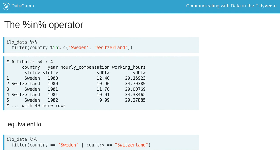While the equality operator in the previous example can filter for only one value at a time, the in operator can look up multiple values, like in this example — here we filter for countries in the vector on the right-hand side of the in operator, which is actually equivalent to using the or operator with multiple equality operators. So in the following exercise, you are going to use this new in operator to only retain European countries in the dataset.